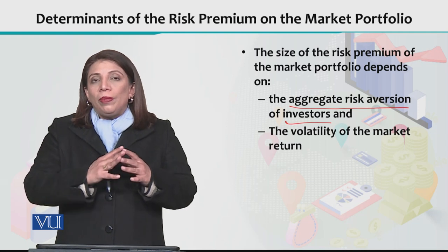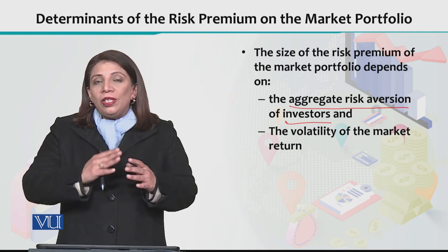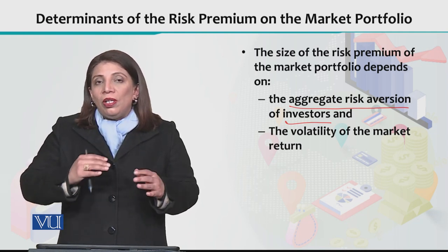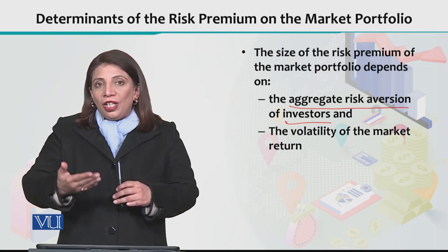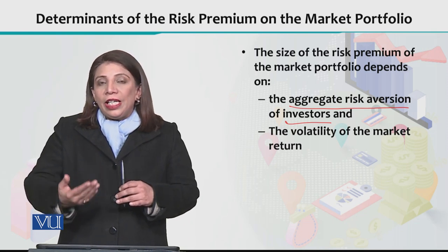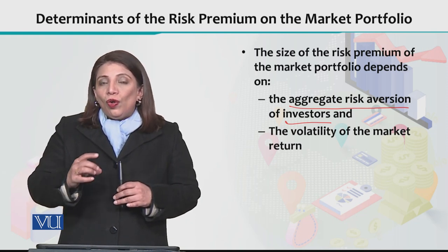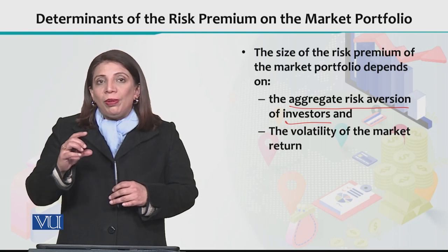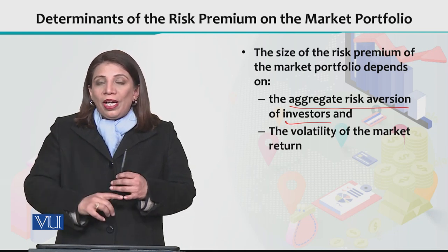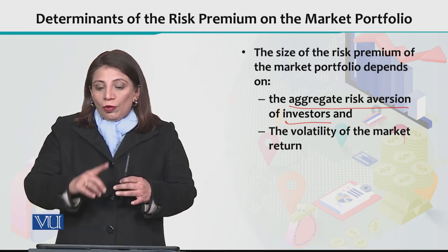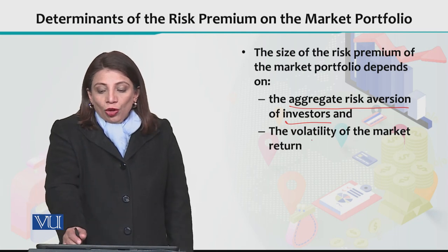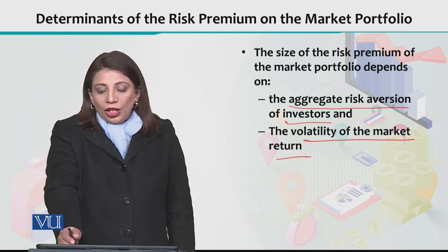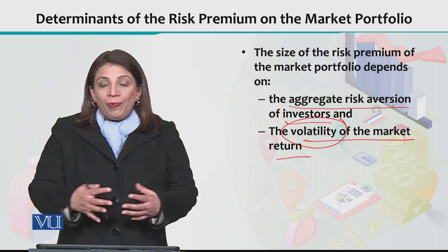So your risk aversion — the investors' general risk aversion extent or degree — determines what you want to do. The second factor is the volatility of the market return.